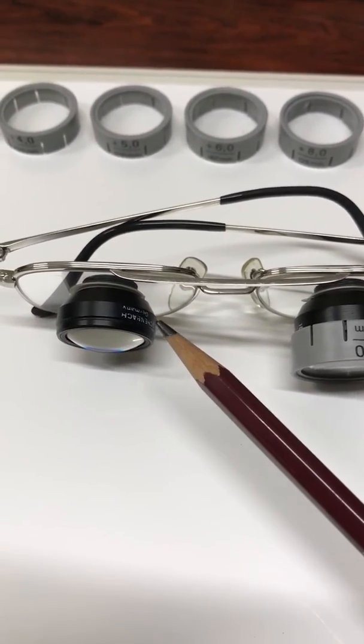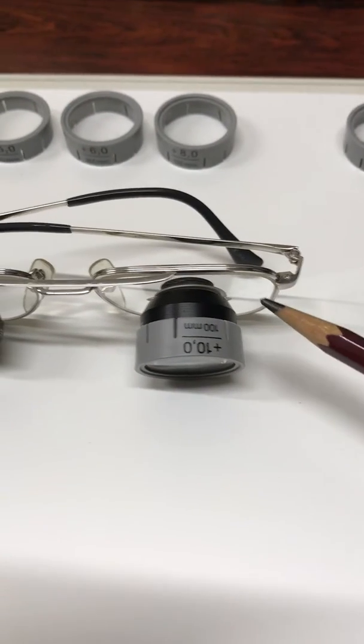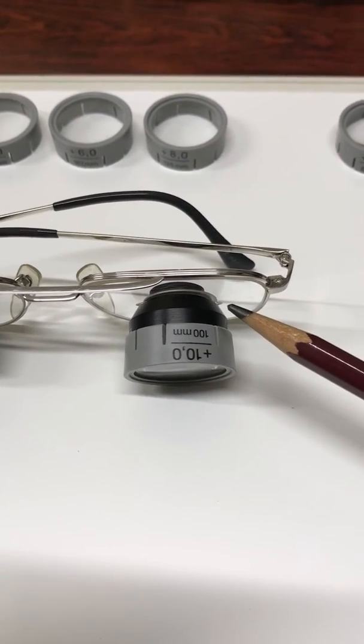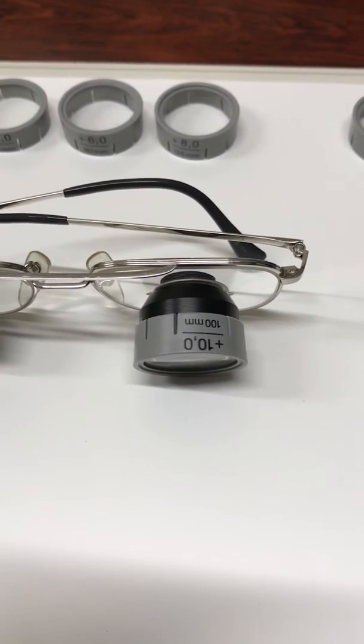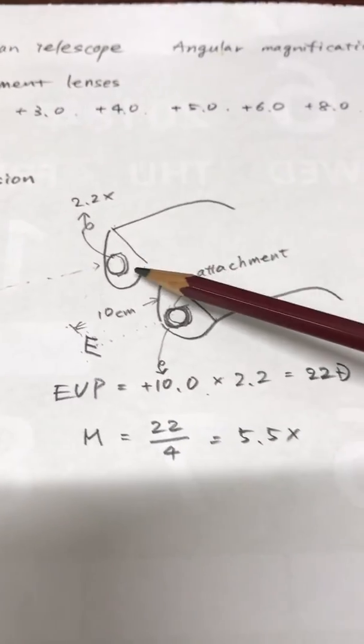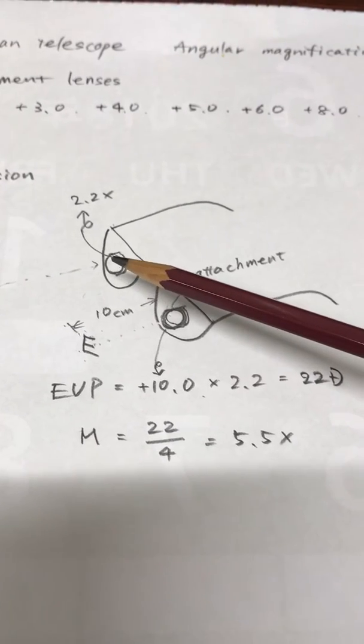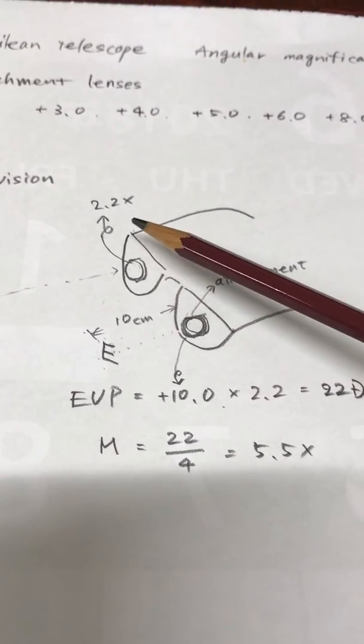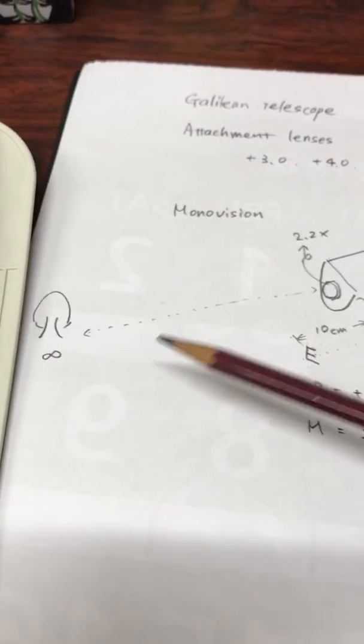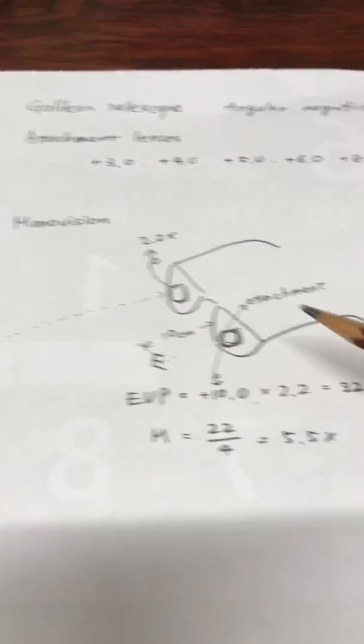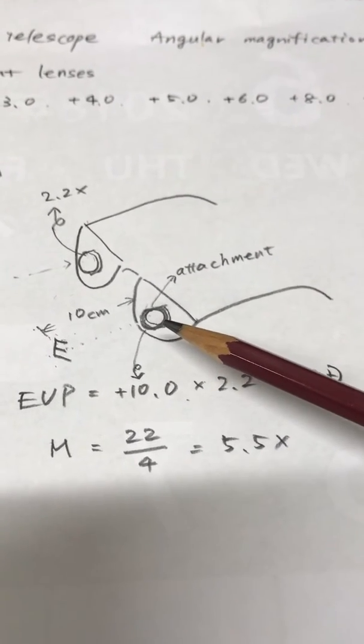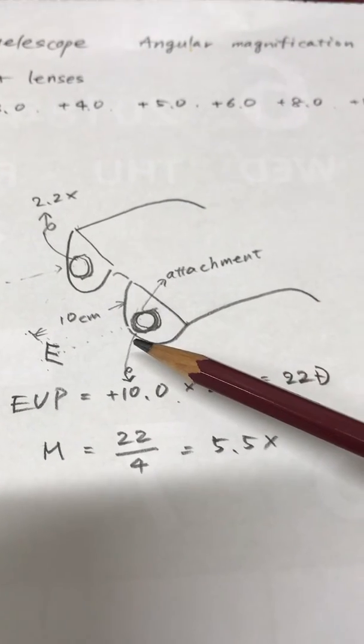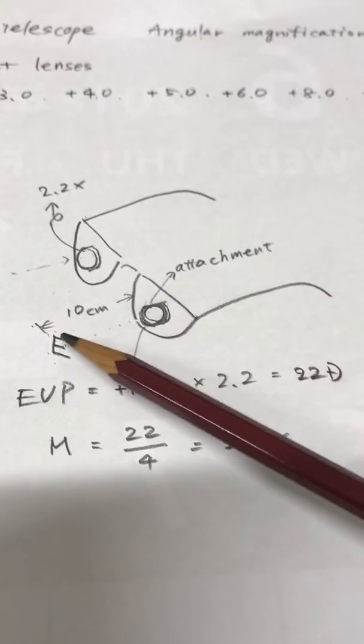The right eye has an angular magnification of 2.2 times to see the distance objects, and the left eye is to see the near object with a working space of 10 centimeters.